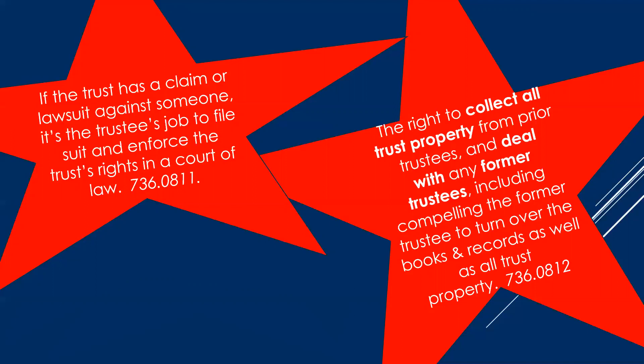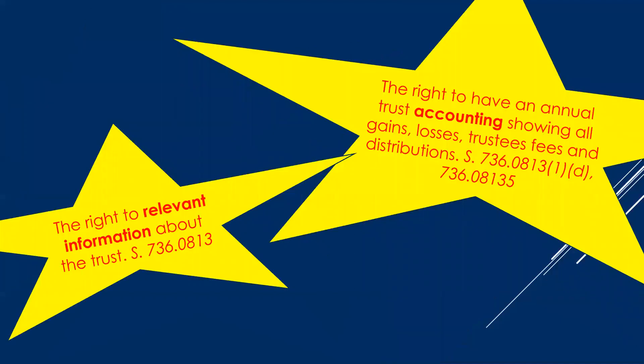When one trustee leaves and another takes over, you're supposed to transfer all the books and records in a timely manner. Discovery in trust and estate lawsuits has changed dramatically — it used to mean gathering physical documents, but now it's: just send me a PDF, send documents scanned via Dropbox. You have the right to relevant information about the trust. You have a right to annual trust accountings showing all gains, losses, trustee fees, and distributions. The issue in trust litigation is often what actually constitutes a proper accounting.